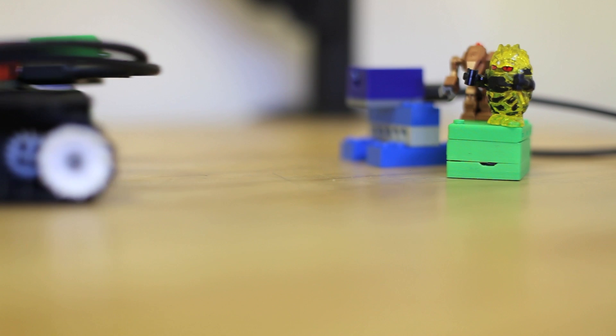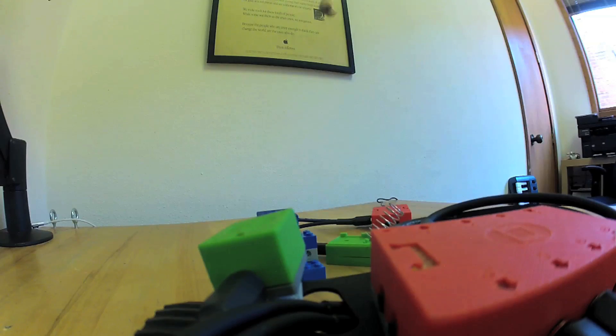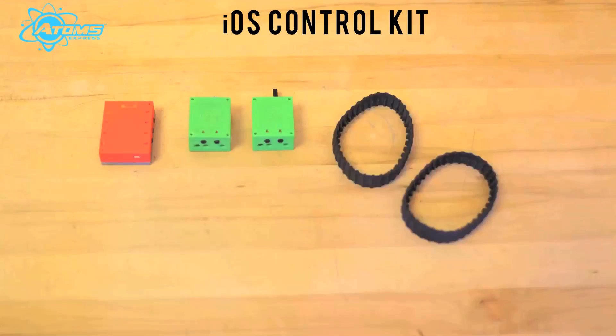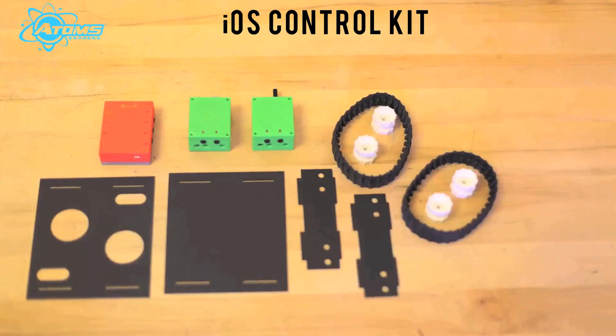With our iOS deluxe control kit you get our IR laser and exploding brick so not only do you drive the tank around but you can blow up that Death Star model you made. The iOS kit comes with a Bluetooth module, two motors, two rubber tank tracks, some structural parts, and an AC charger.